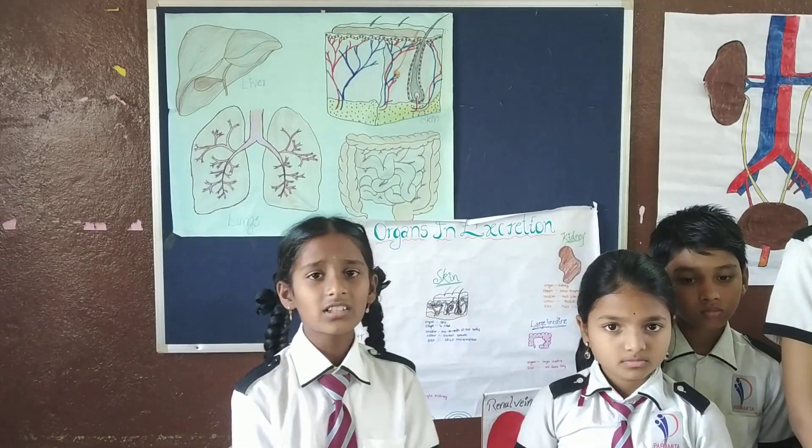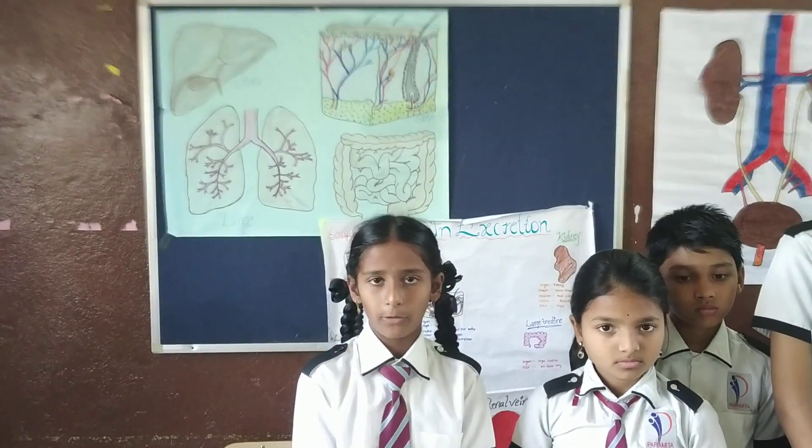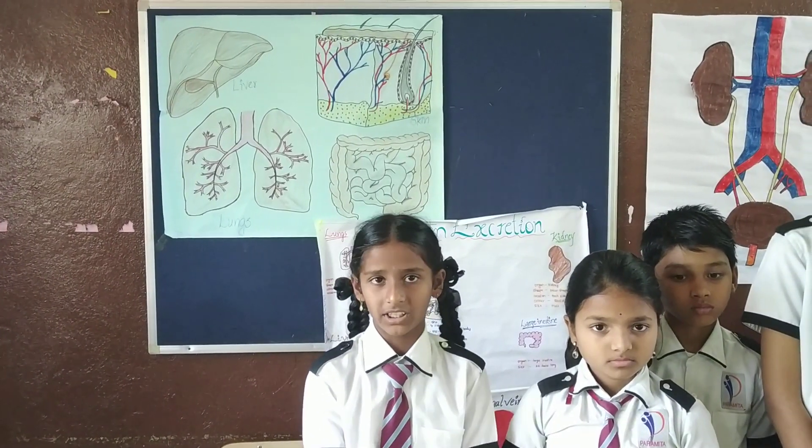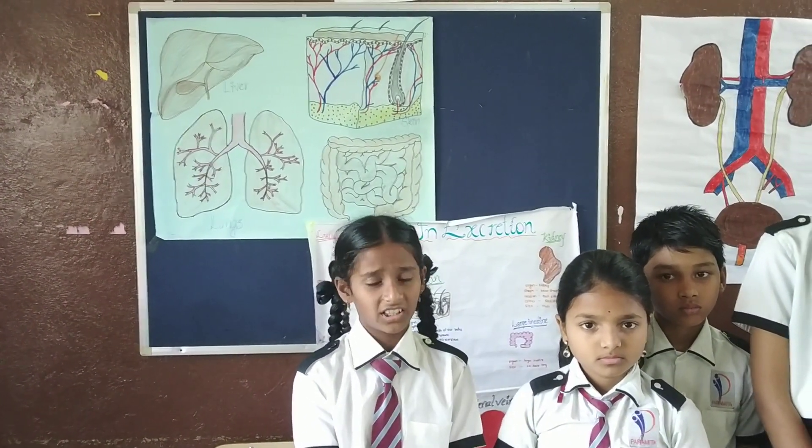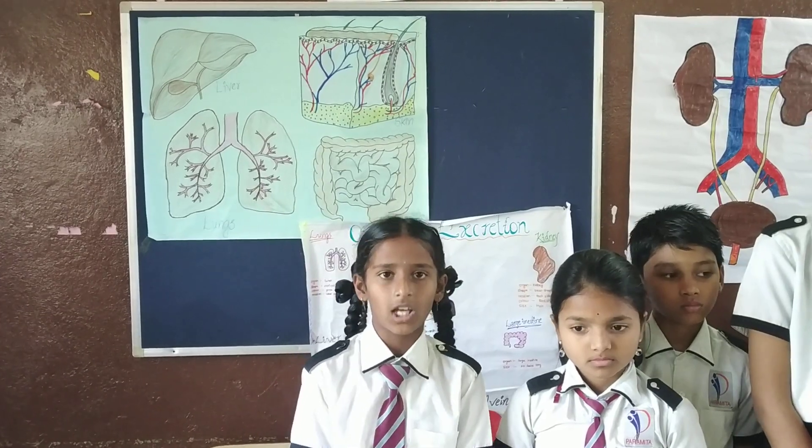The liver is located near the top of the right kidney. Next is the intestine and stomach.